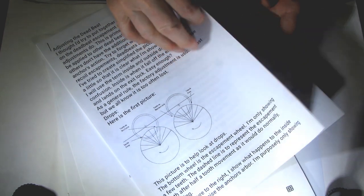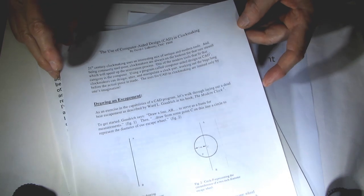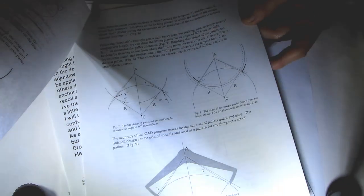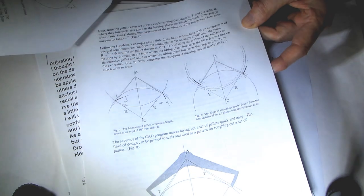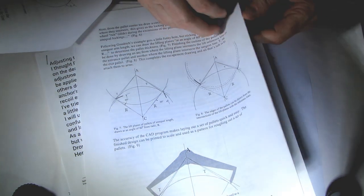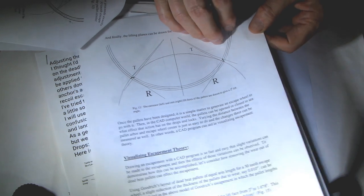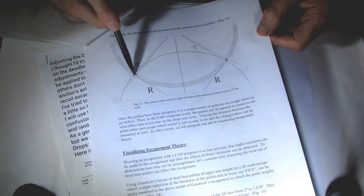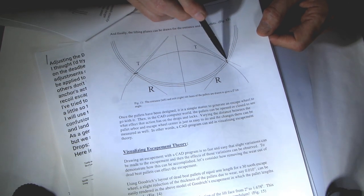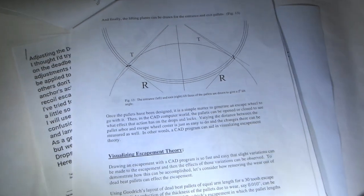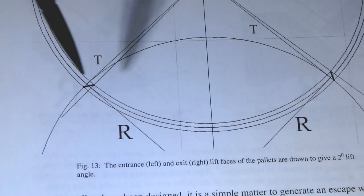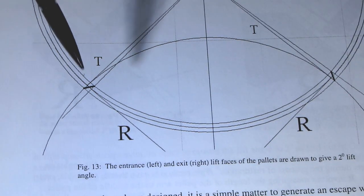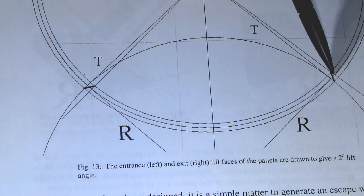In that video I also showed how I researched the design of the clock deadbeat escapement and how I learned its architecture, which allowed me to understand how pallets impulse faces are constructed and what actual lift angles must be for the verge to work nicely in tandem with an escape wheel. The link to the first video is in the description.